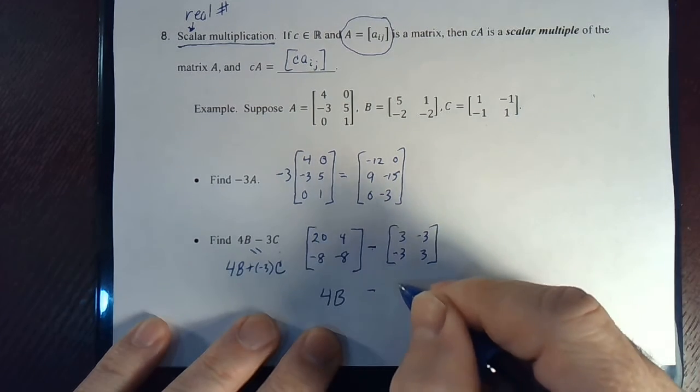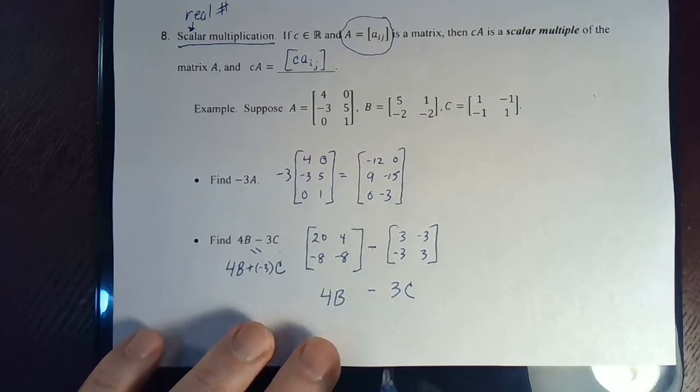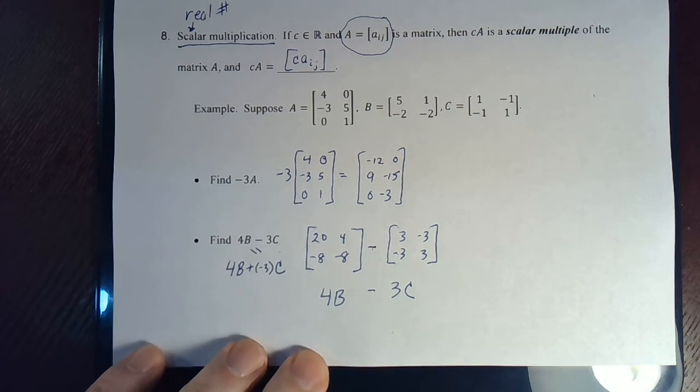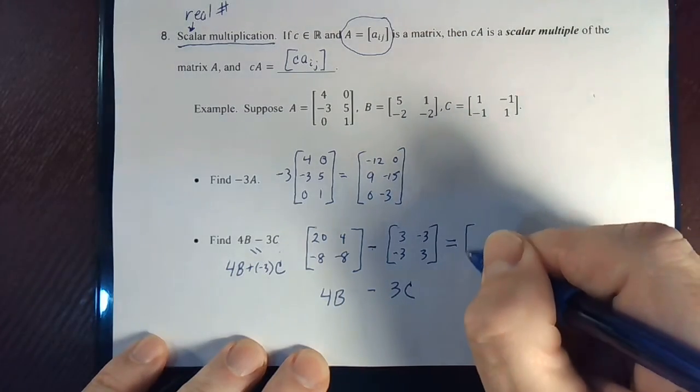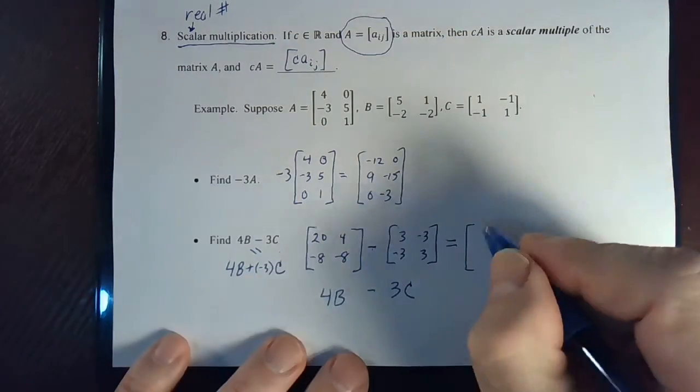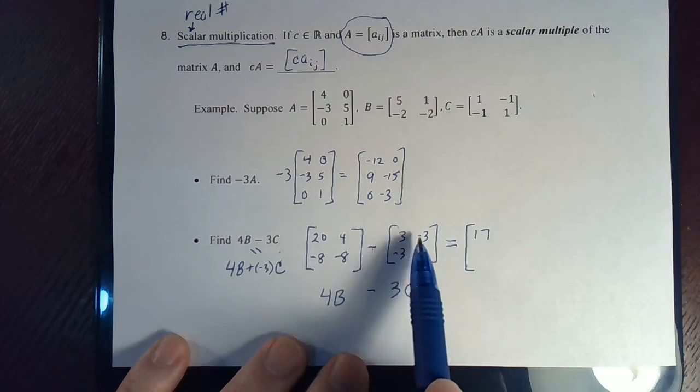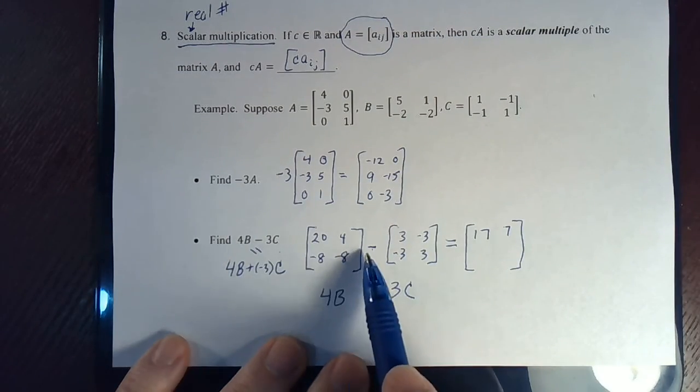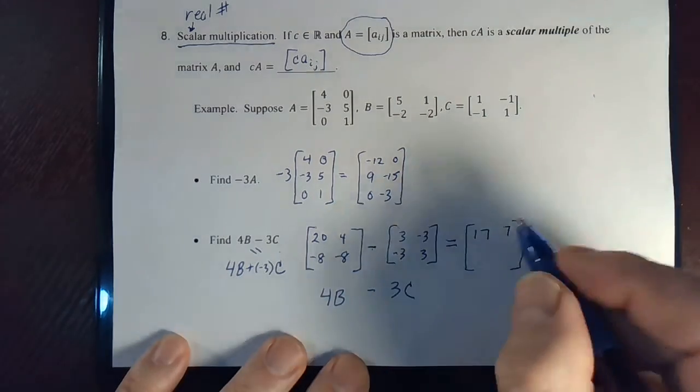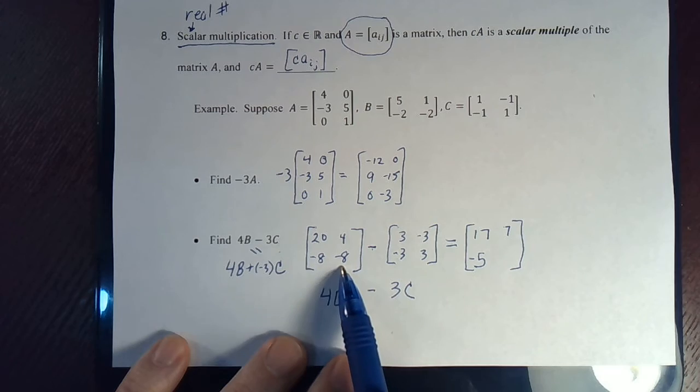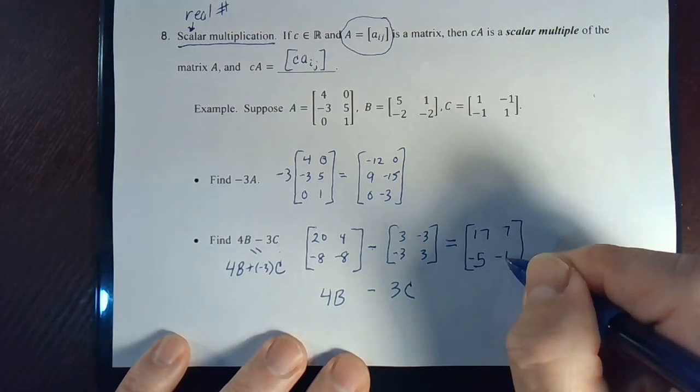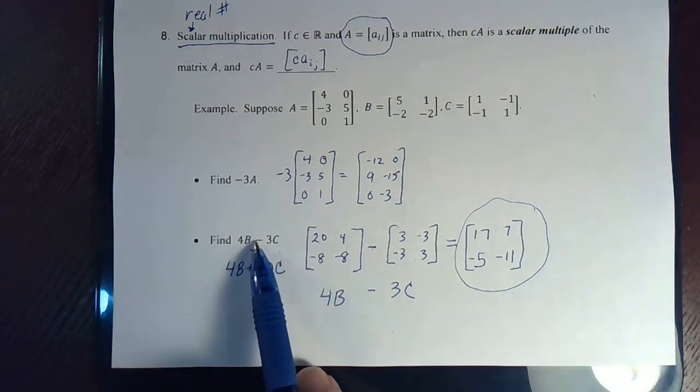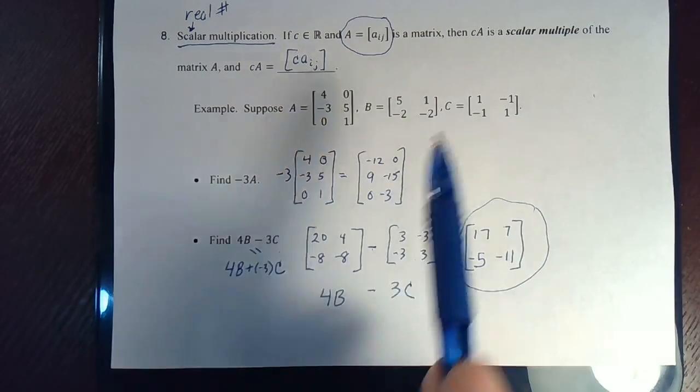All right, well, we're not done. That would be minus 3C. So one more time. This is 4B, and this is 3C. And we left the minus sign there because it's that minus sign right there. So we're going to do a subtraction. 20 minus 3 is 17. 4 minus negative 3 is the same as 4 plus 3, which is 7. Negative 8 minus negative 3 is negative 8 plus 3. That's negative 5. Negative 8 minus 3 is negative 11. So this is the result that we were looking for. It is 4B minus 3C, where this is B, and that's C.